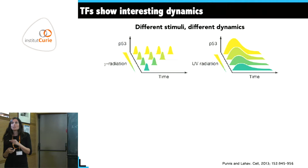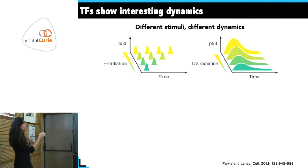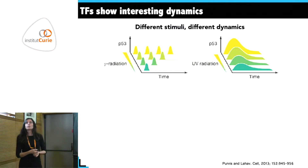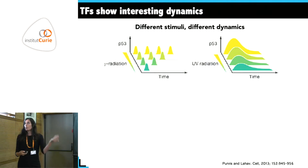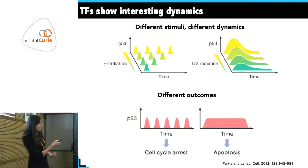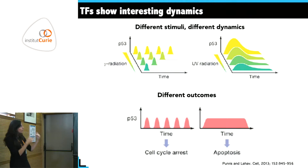It has been observed that with gamma irradiation you get pulses with the interesting characteristic that the amplitude stays the same while the number of pulses increases with increasing stress. Another type of stress leads to a very different dynamical pattern — a single pulse of activation that falls off, where the amplitude is proportional to the stress.